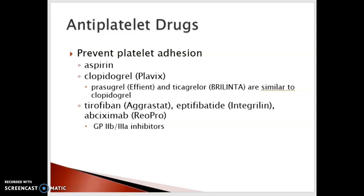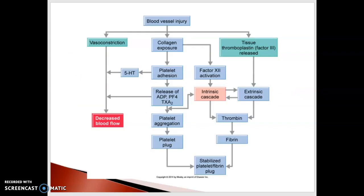Antiplatelet drugs work through a different mechanism. When we have a blood vessel injury, we get vasoconstriction, collagen exposure, and tissue thromboplastin factor is released. The intrinsic and extrinsic cascades occur, ultimately resulting in vasoconstriction that decreases blood flow, and we get platelet aggregation and a platelet plug. Thrombin and fibrin then come together and share the pathway. With these anticoagulants, the platelet aggregation and platelet plug is what's affected because we are causing platelet inhibition — this is where aspirin works.